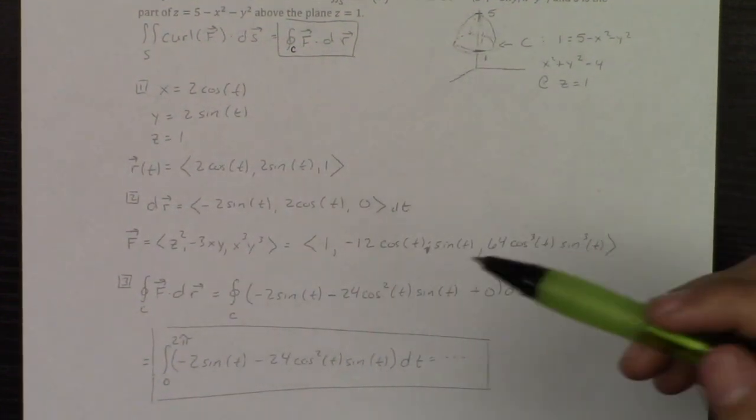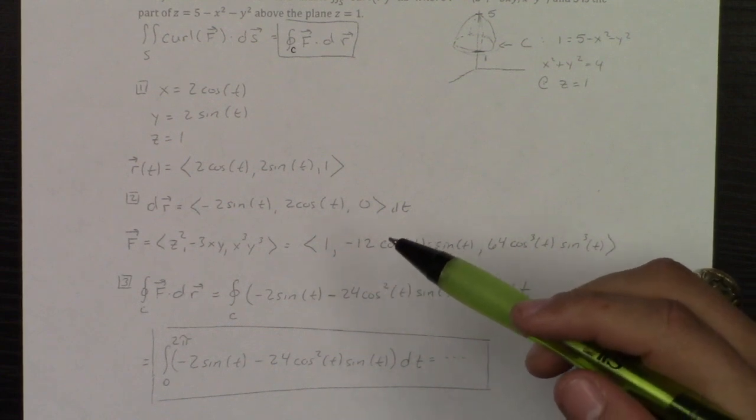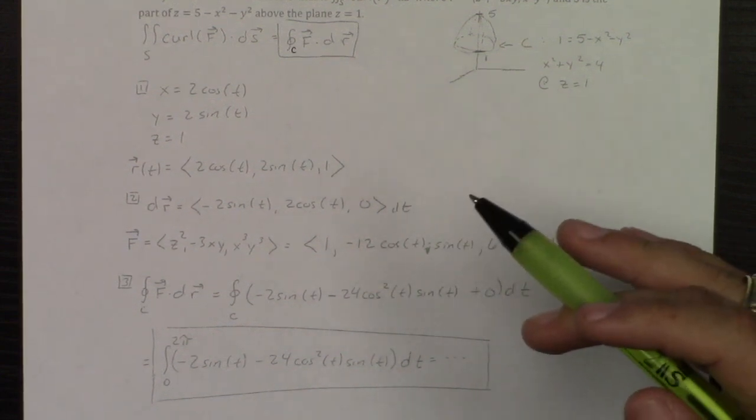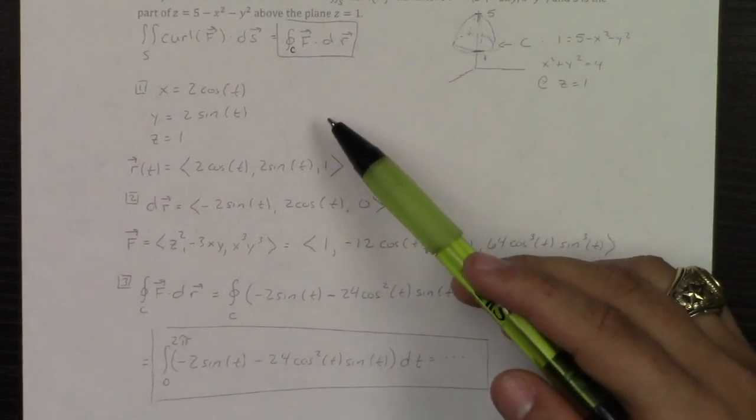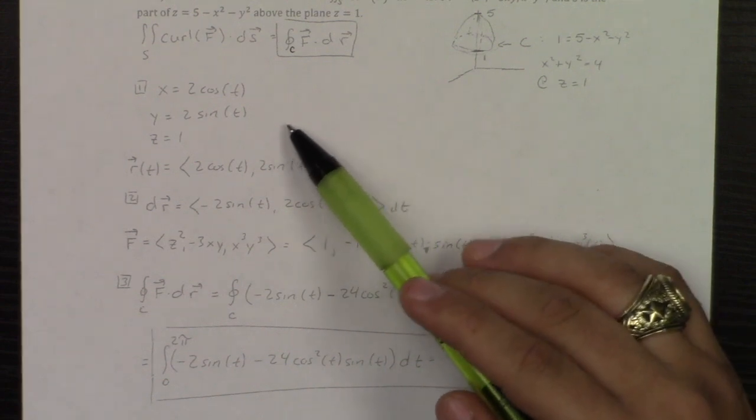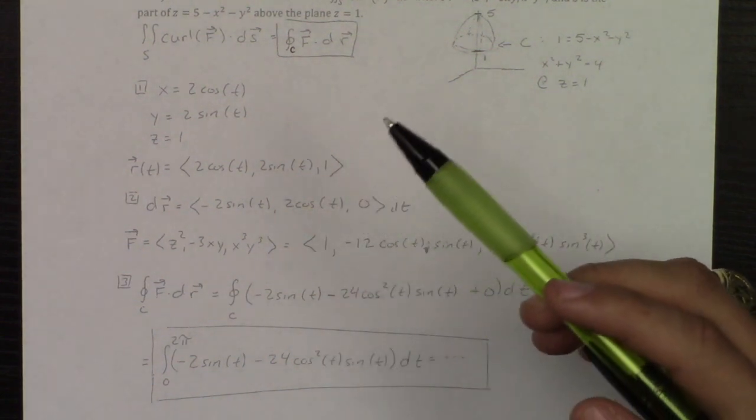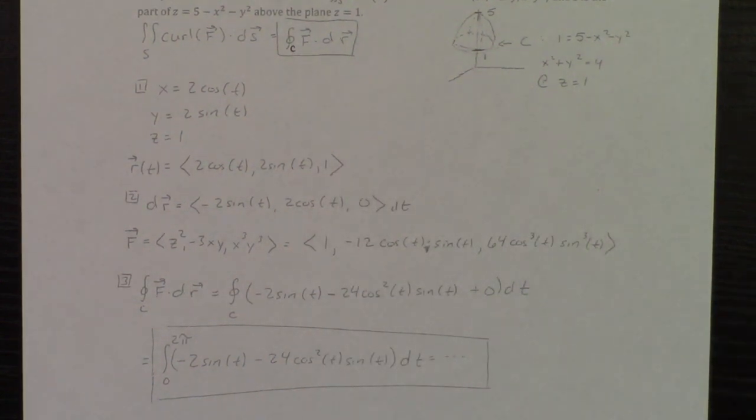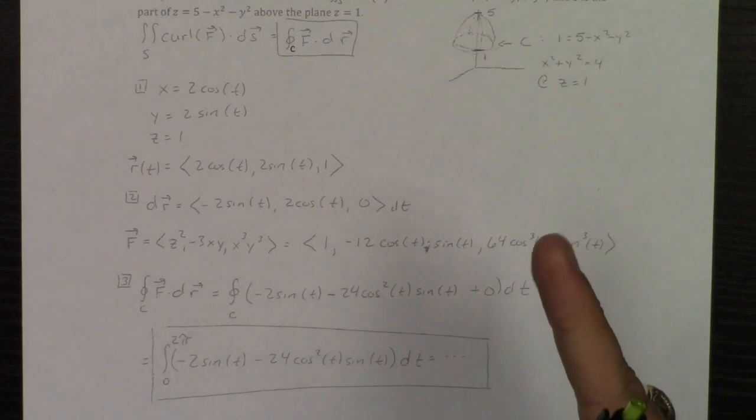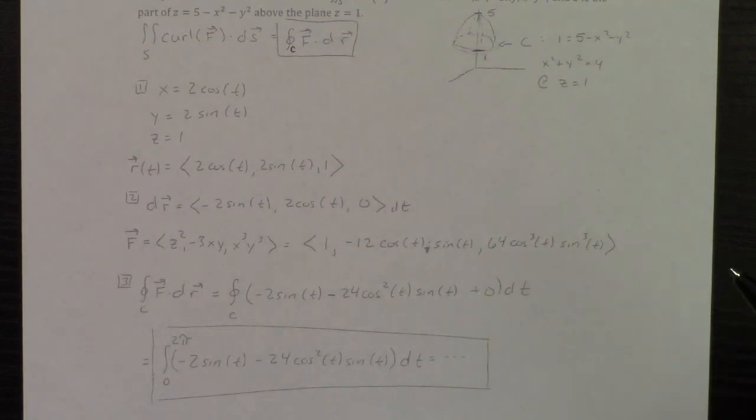Then if you need to, go all the way back to the line integral problems, the line integrals part 1 and 2. Go back to those if you need to. I think I do an F dotted with dr, I'm pretty sure in part 2. And so if you need to, go back to that to remember how to do line integrals. But that's how you would do that. Join me in the next one, and in the next video, we'll practice going the other direction. Thank you.